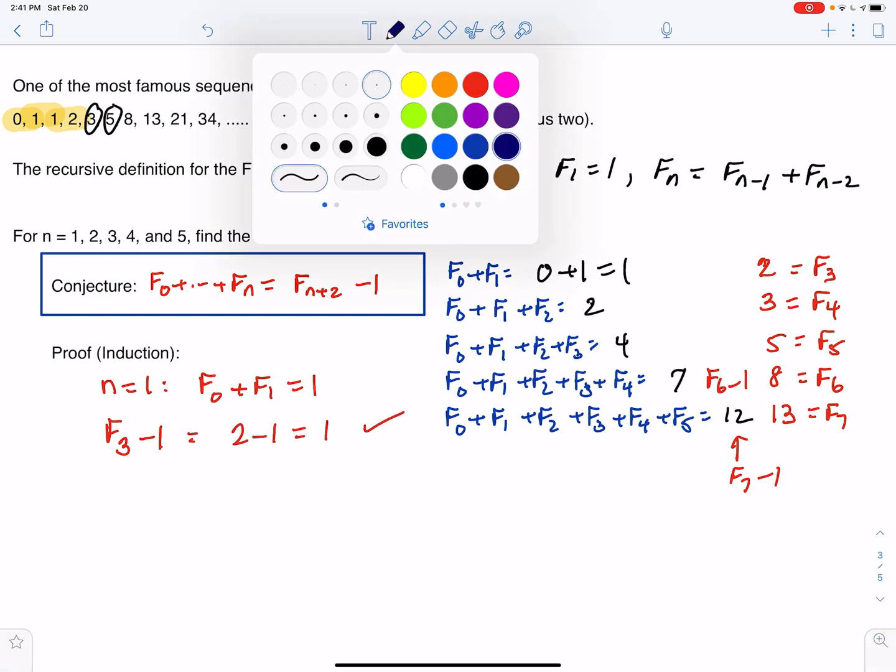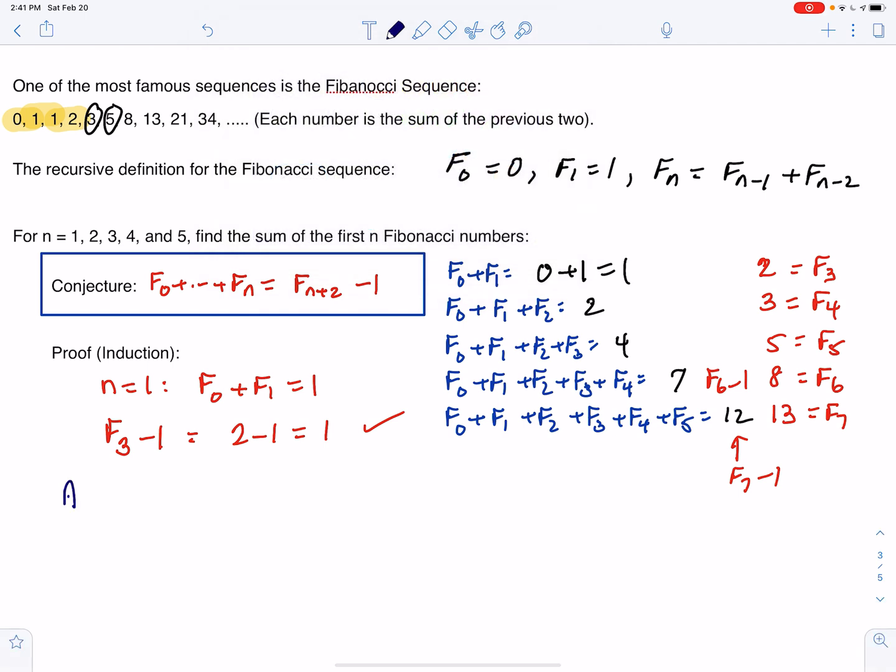So base case is proven. So now we assume that F0 plus F1 plus up through Fk is equal to Fk plus 2 minus 1 for some k.